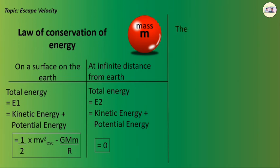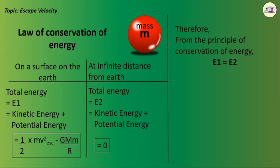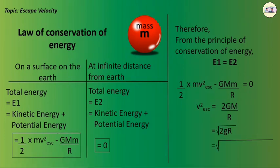Therefore, from the principle of conservation of energy, E1 = E2, i.e., ½mv²ₑₛcₐₚₑ - GMm/R = 0. So v²ₑₛcₐₚₑ = 2GM/R, which gives vₑₛcₐₚₑ = √(2GM/R) = √(2gR).